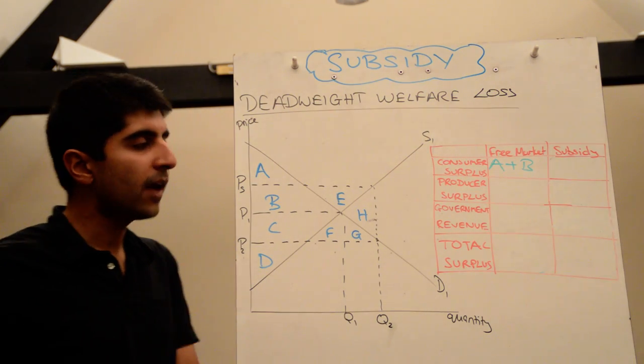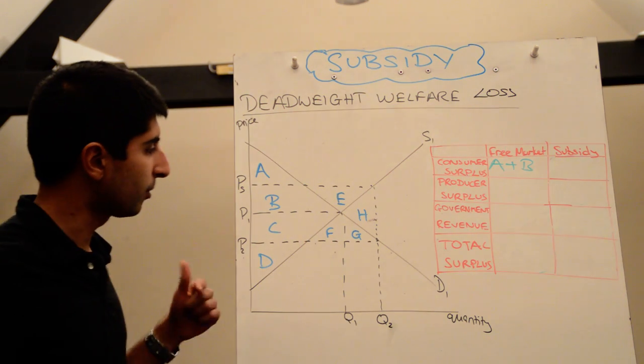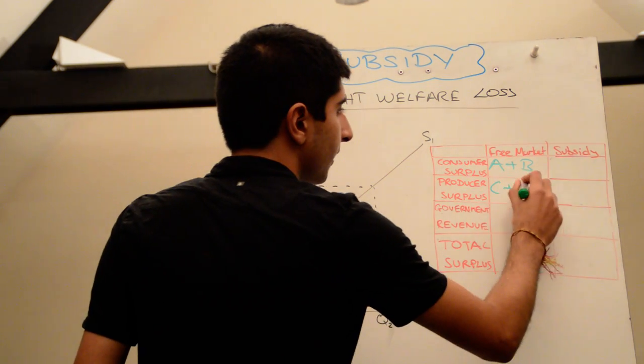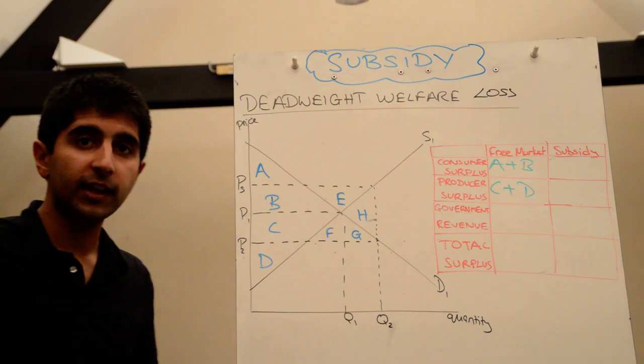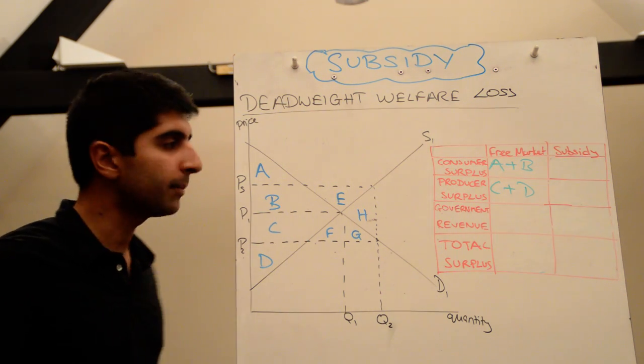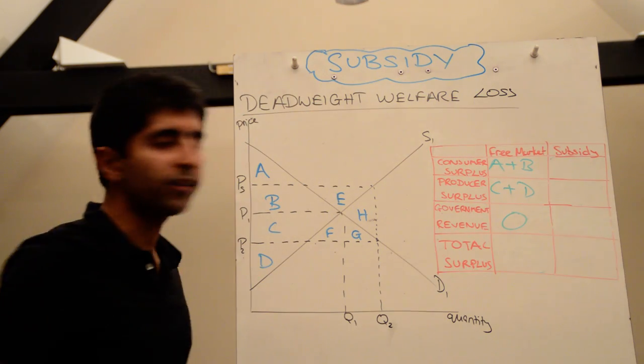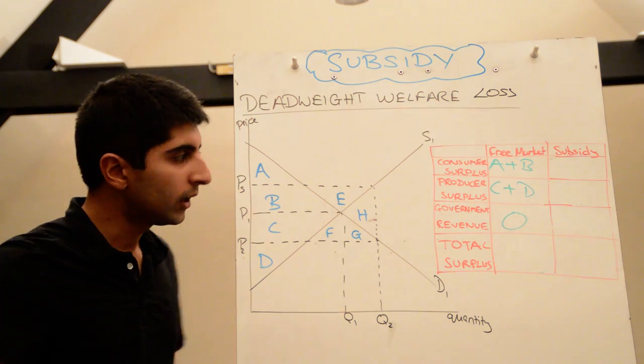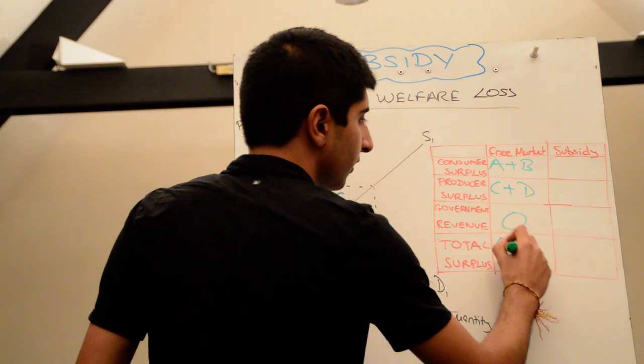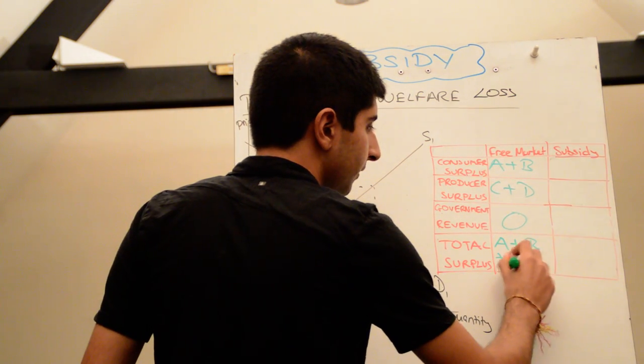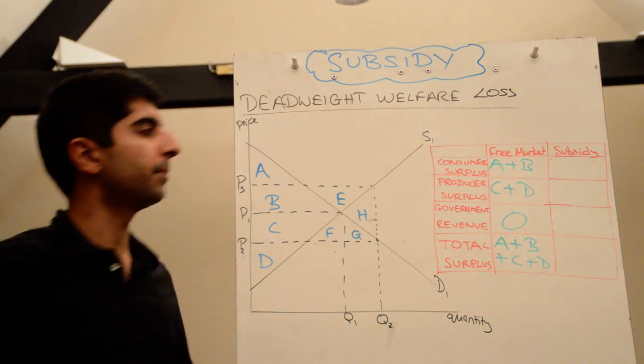The initial producer surplus was the area above the supply curve beneath the price equal to C plus D. There was no cost of the government because no subsidy was being implemented in the free market. There was no revenue generated for the government, so nothing was happening with the government at all. So the total surplus without the subsidy was just A plus B plus C plus D. Simple stuff, right?